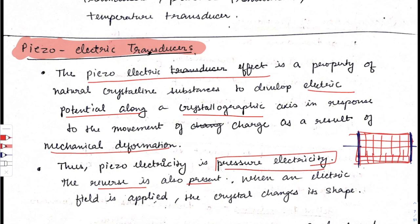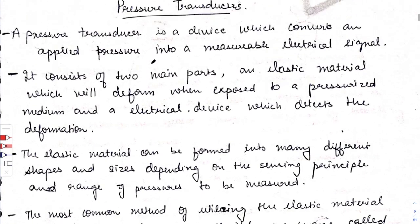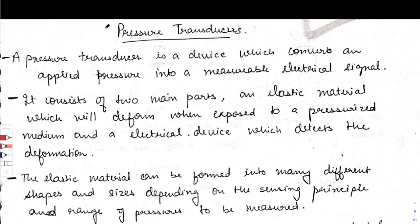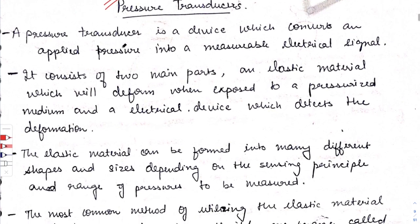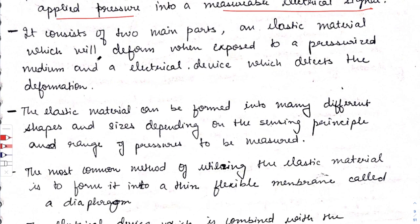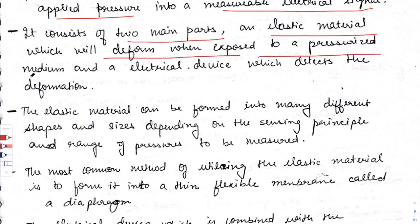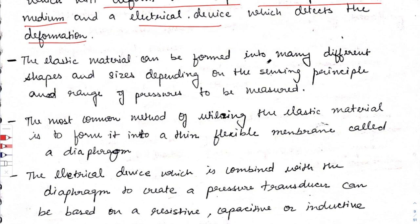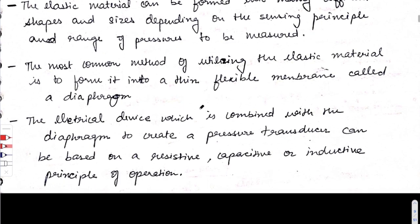Coming on to pressure transducers: a pressure transducer is a device which converts an applied pressure into a measurable electrical signal. It consists of two main parts — an elastic material which deforms when exposed to a pressurized medium, and an electrical device which detects the deformation. The elastic material can be formed into many different shapes and sizes depending on the sensing principle and range of pressures to be measured.